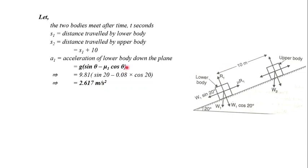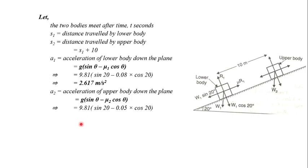Similarly, acceleration of the upper body, let it be a2. It is again given by g sin theta minus mu2 cos theta. Then we will get a2 to be 2.894 meters per second squared.